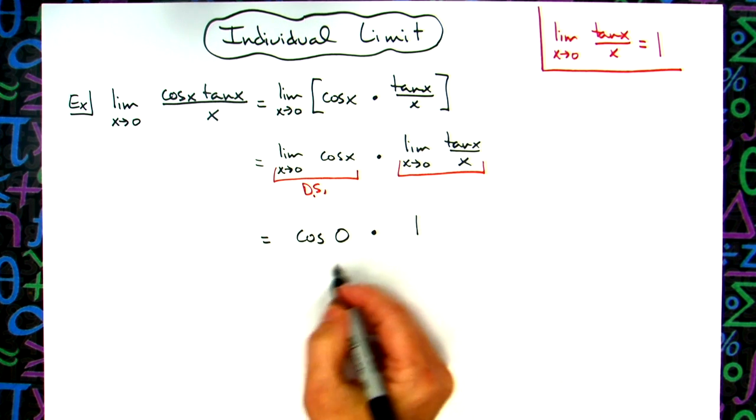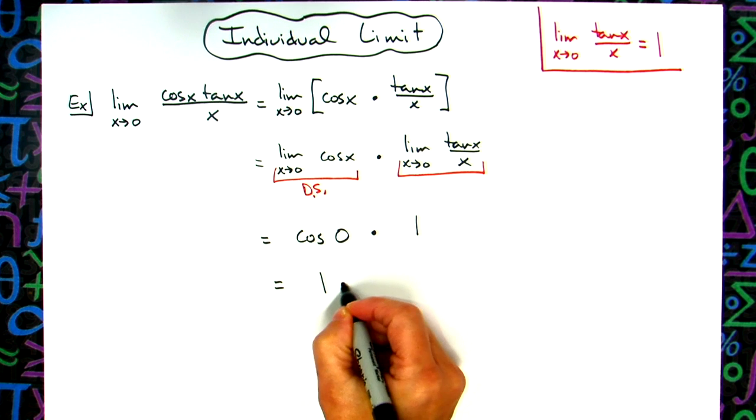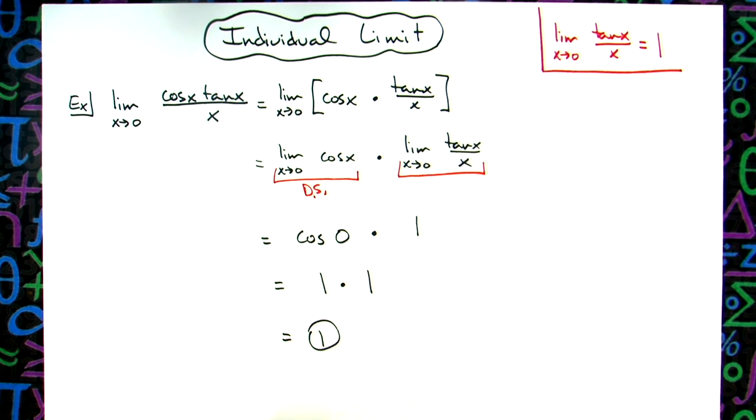Referring back to your trig, cosine of 0 is 1, so 1 times 1 would give me an overall limit of 1.